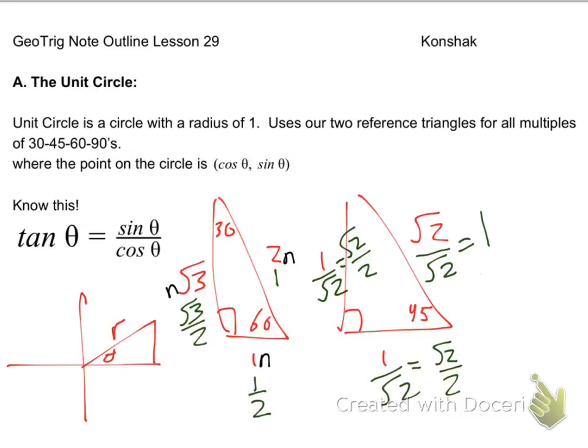So everybody kind of gets the idea there. In green, I can actually set the ratios of my 30s, 60s, 90s and 45, 45, 90s to 1, 1 half, square root of 3 over 2, and 1, square root of 2 over 2, and square root of 2 over 2.